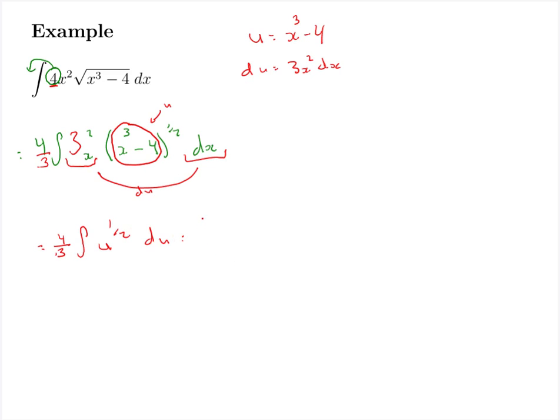Again, we can just do our basic antiderivatives now. We still have our 4 thirds, but now we're going to increase our exponent by 1, and we'll divide by that number. So we've got 4 thirds times 2 thirds, because we use the reciprocal now, u to the 3 halves plus c.